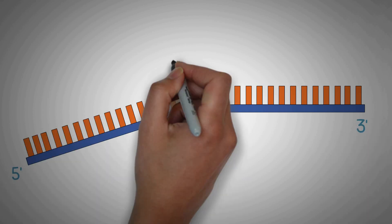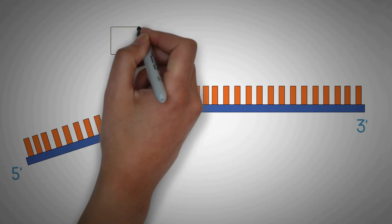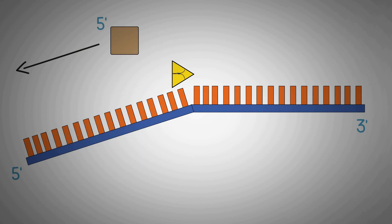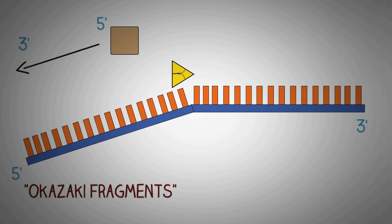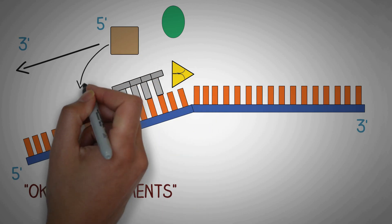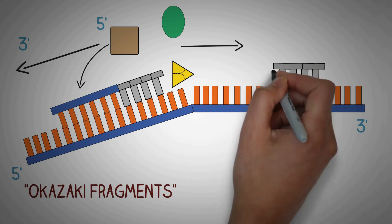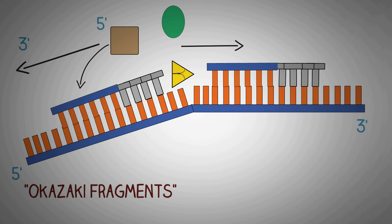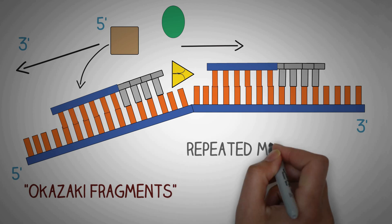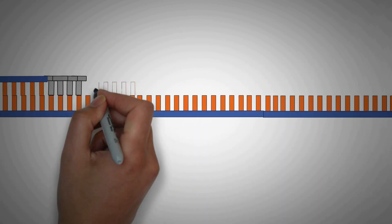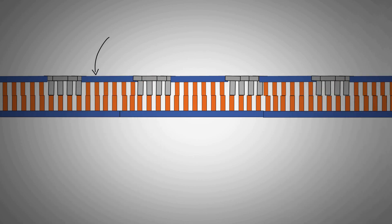On the lagging strand, which runs from five prime to three prime, the main problem is that the DNA helix is being opened in the opposite direction to which the DNA polymerase synthesizes new DNA. This problem is solved by forming new DNA in short segments known as Okazaki fragments. On the lagging strand, the primase synthesizes a short primer, then the DNA polymerase synthesizes a short segment of DNA and separates. After the helicase opens more of the helix, the primase synthesizes a new primer further up, followed by formation of another short DNA segment. This process is repeated multiple times, which is why it is known as discontinuous DNA synthesis.